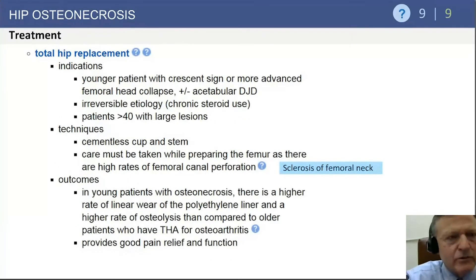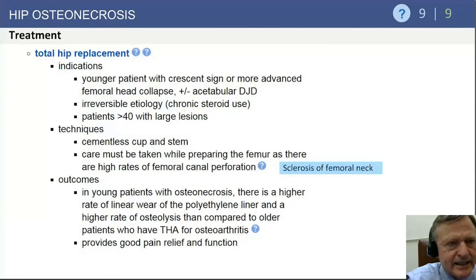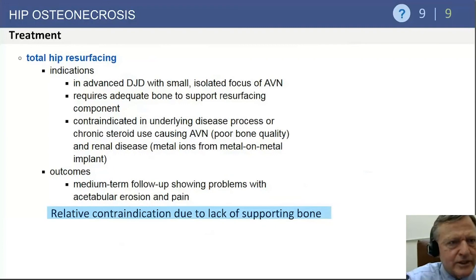Regarding THA in osteonecrosis, femoral canal perforation is a recognized complication, most commonly seen in sickle cell disease where multiple infarcts and bony sclerosis of the femoral neck can misdirect reamers outside the femur. Hip resurfacing is relatively contraindicated in significant osteonecrosis with collapse due to lack of supporting bone, compounded by concerns with metal-on-metal bearings — making this procedure increasingly uncommon.